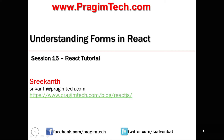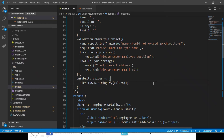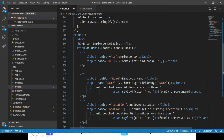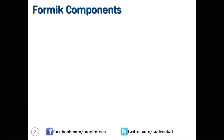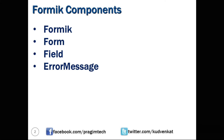In this session we will understand the Formik component. If we look at the code from our last session, though we tried to make our code better by using the getProps method, we still have to pass that to each input and write code for displaying validation messages. To save time and make our code better, Formik comes with a few built-in components: the Formik component, Form component, Field component, and ErrorMessage component.